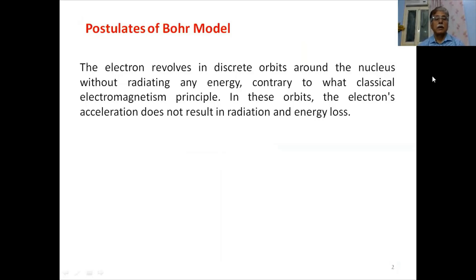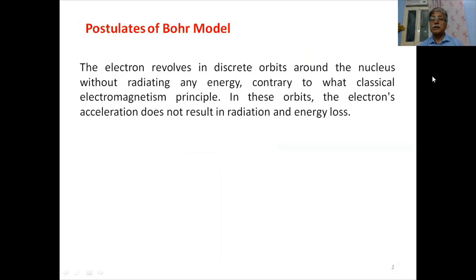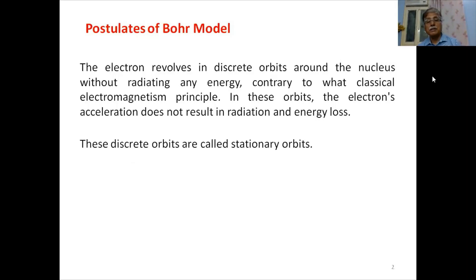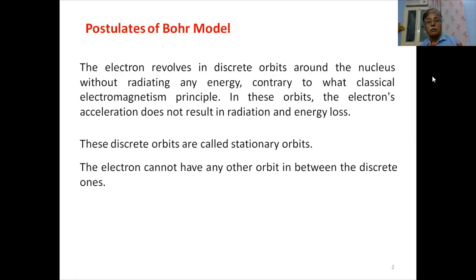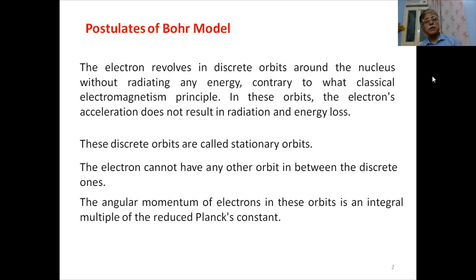According to the Bohr model, the electron revolves in discrete orbits around the nucleus without radiating any energy. Mind it — it is not radiating any energy despite being accelerated. Any electron orbiting around the positive nucleus is certainly accelerated, and any accelerated charge particle should radiate energy according to classical electromagnetism. But it is not radiating because these discrete orbits are stationary orbits. Electrons in stationary orbits will not radiate any energy, and no other orbits in between are allowed.